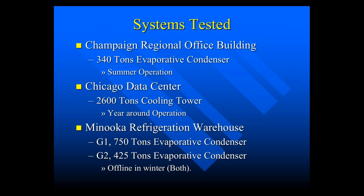Now we're done with the background — on to what I actually did. We've got four systems: the Champaign Regional Office Building, a 340-ton evaporative condenser that operates in the summer; the Chicago Data Center, 2,600 tons operating year-round; and the Minooka Refrigeration Warehouse, which has two systems — G1 at 750 tons and G2 at 425 tons, which are offline in the winter when it's cold.